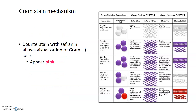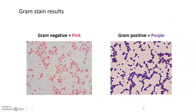Since gram negative cells are now colorless after decolorization, you need to introduce a new stain to visualize them — you can still see gram positives in purple, but to see gram negative cells you apply a counter stain. Safranin, a red or pinkish dye, is used for this purpose and allows you to see the gram negative cells after decolorization. The final results show gram negative cells stained pink or red, while gram positive cells remain a deep dark purple.